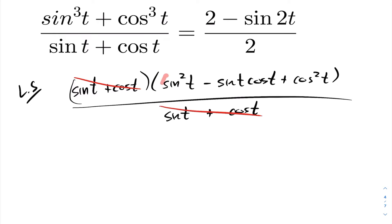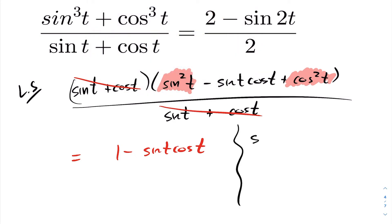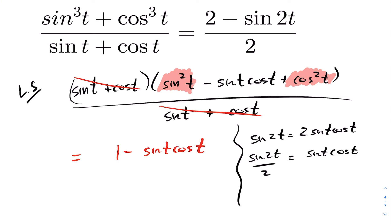We also have the property that sin²t + cos²t = 1, so this simplifies to 1 − sin t cos t. We don't quite have the right hand side yet, but we can observe that sin 2t = 2 sin t cos t, therefore sin t cos t = sin 2t / 2. We substitute that expression in.